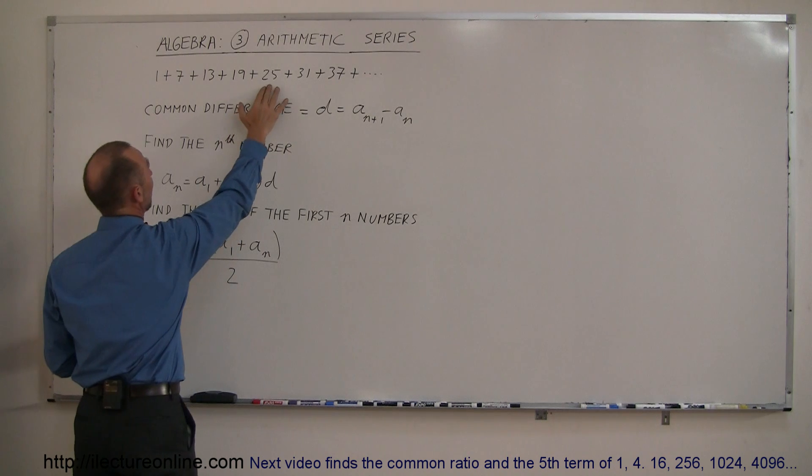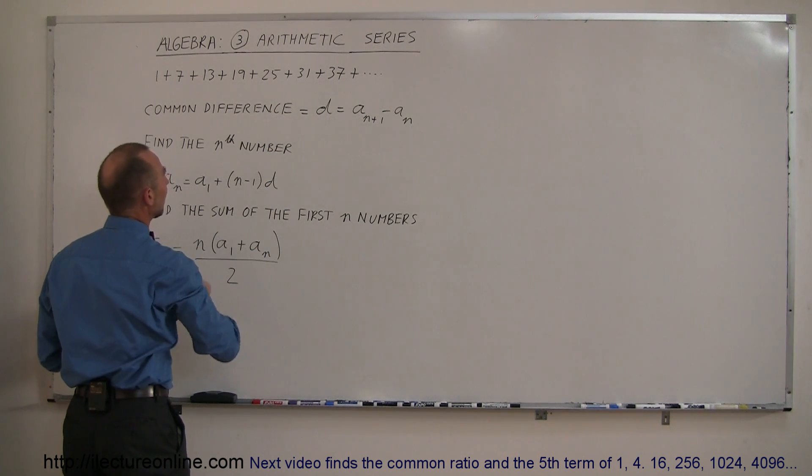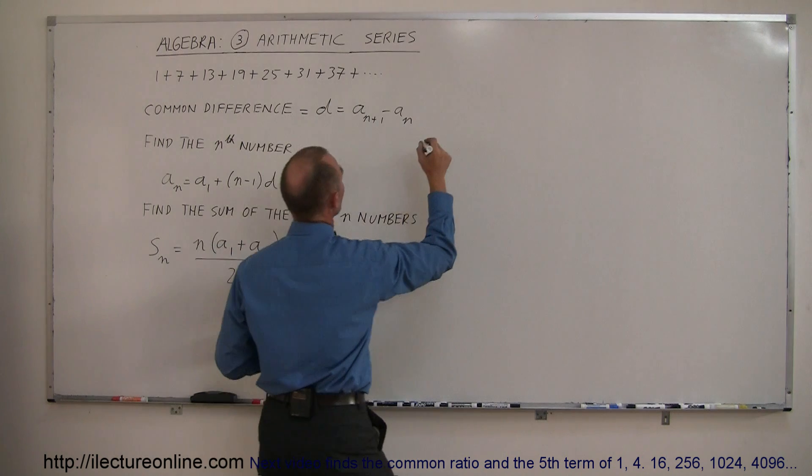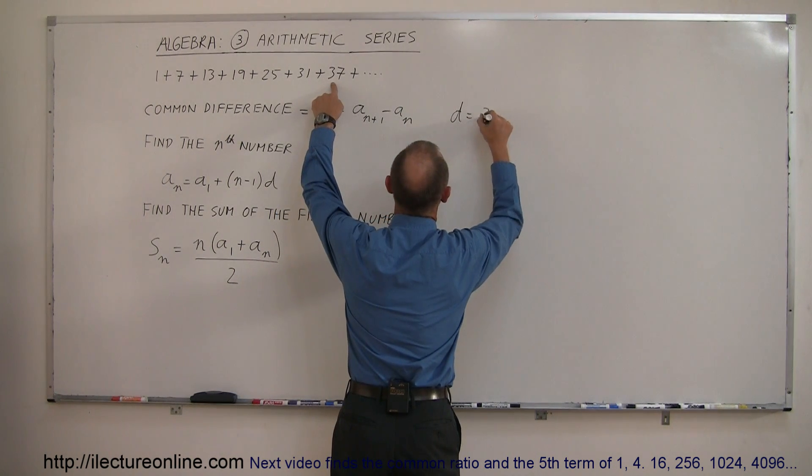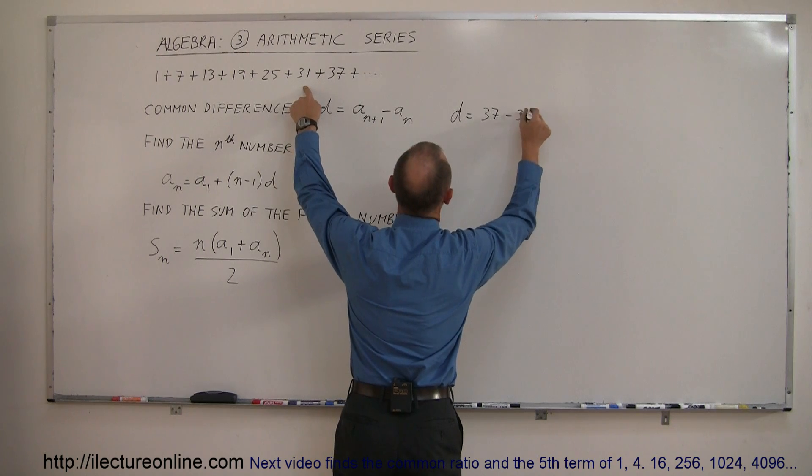If you take any number, subtract the previous one from it, you should get the same number each time. So in this case, let's say we take d equals, let's take this one right here, 37 minus the previous one, 31, we get 6.